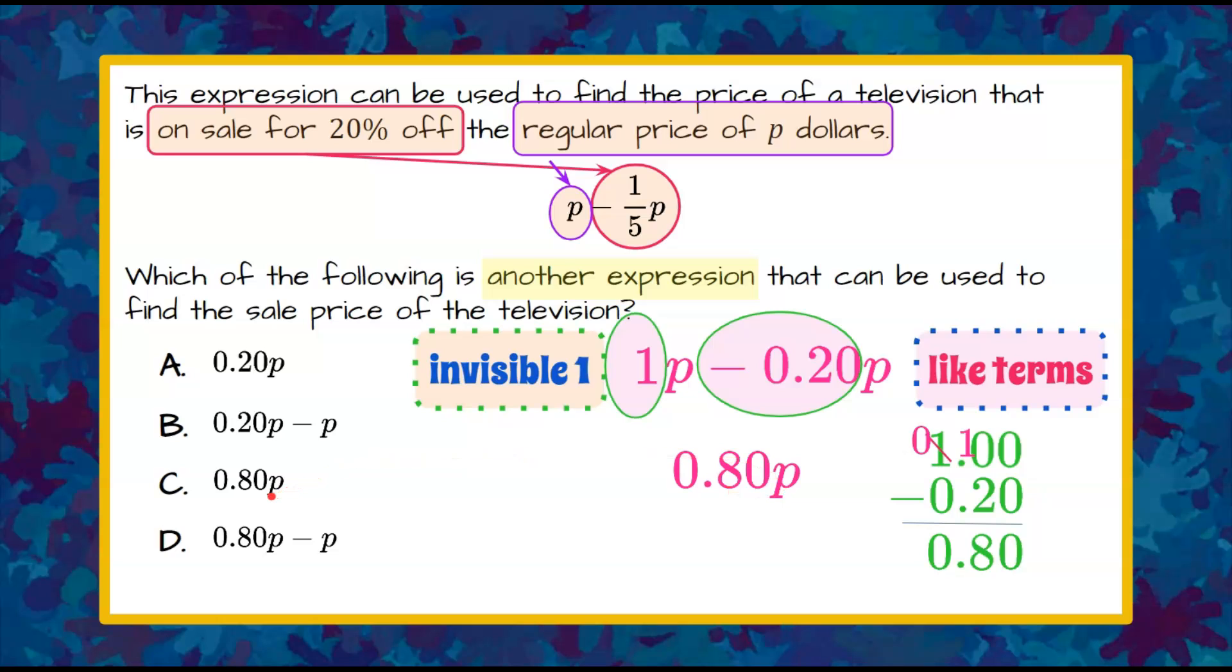If we look at our answer choices, we can see that's answer choice C. So what this is saying is when you buy something on a discount of 20% off, when you subtract that 20% off, you're going to actually pay 80% of the original price of the TV.